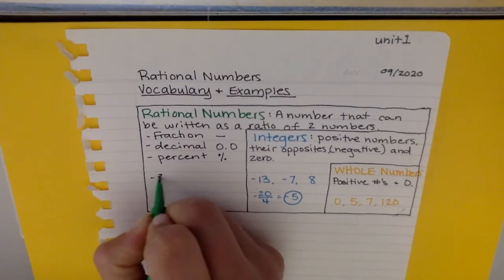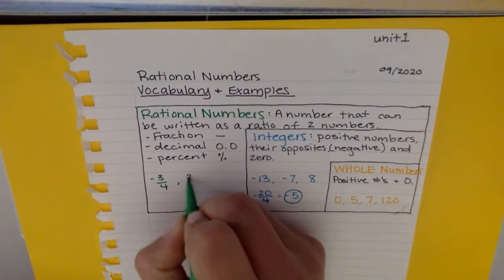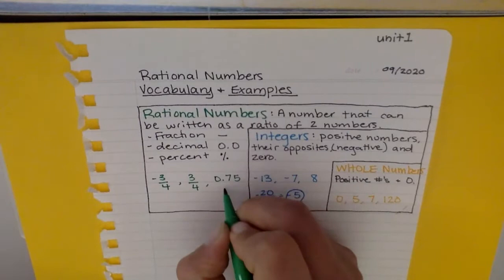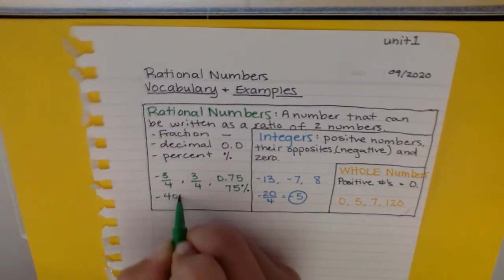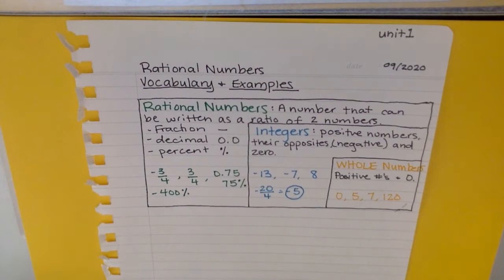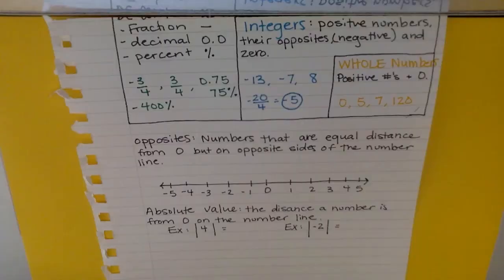A couple of examples of some ratios, some rational numbers that we'll be seeing: we could see something like negative three-fourths, we could see the opposite of negative three-fourths which is positive three-fourths, we could see that in its decimal form or in its percent form, but we could also see something like negative four hundred percent. Go ahead and pause, make sure you have these definitions, and then come back for the next piece.